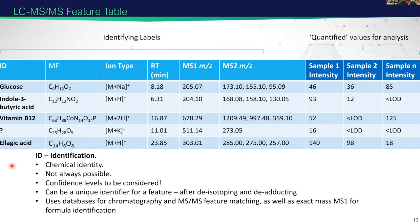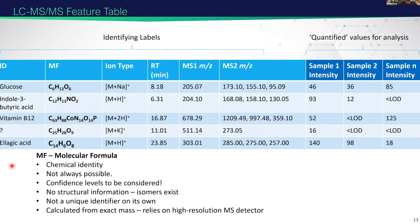We get identifications through using our databases and comparing to our MS/MS features, as well as our chromatographic separation. One step below that in identification is just the molecular formula — the number of atoms, the number of each element. This is not necessarily a unique feature in our LC-MS run because the same molecular formula might be detected multiple times.